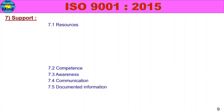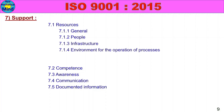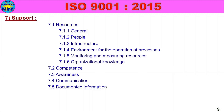7.1 has additional subclasses: 7.1.1 General, 7.1.2 People, 7.1.3 Infrastructure, 7.1.4 Environment for the Operation of Processes, 7.1.5 Monitoring and Measuring Resources, and 7.1.6 Organizational Knowledge — six additional subclasses in total.